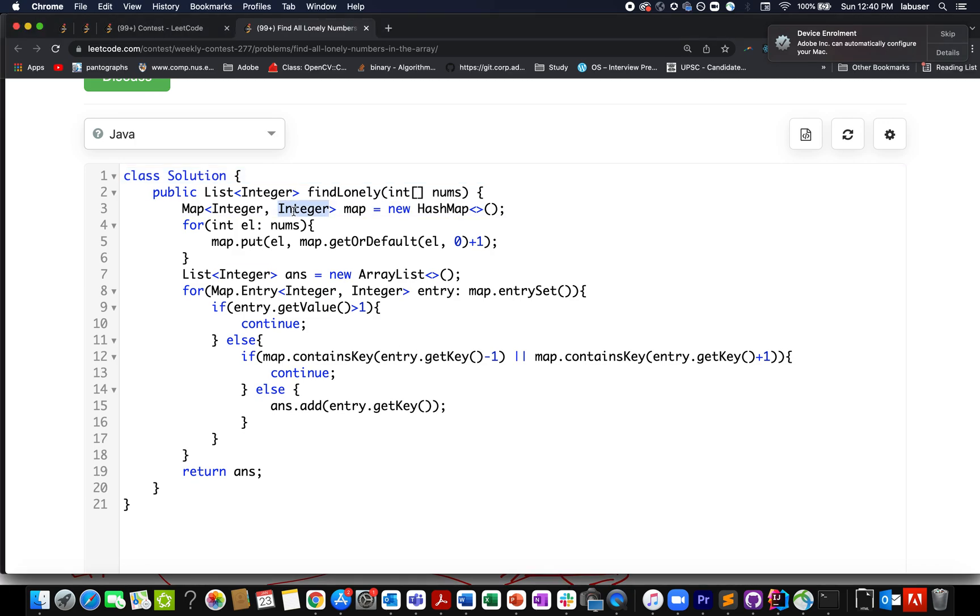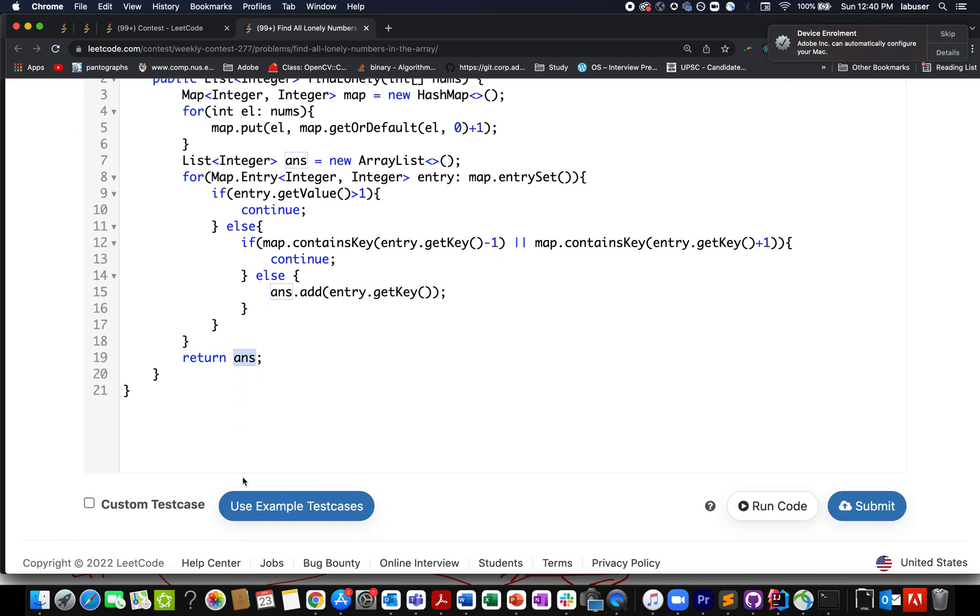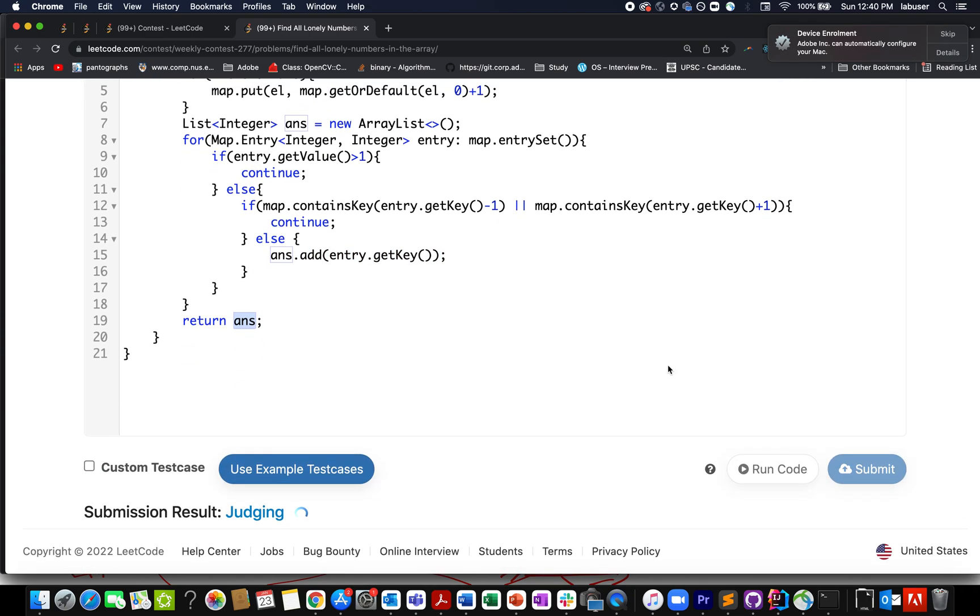I'm building the map, then iterating through its entries. I check if the frequency is greater than 1—if so, I skip it. Otherwise, I check if the map contains key minus 1 or key plus 1. If so, I skip it; otherwise, I add it to the result. In the end, I return the result.